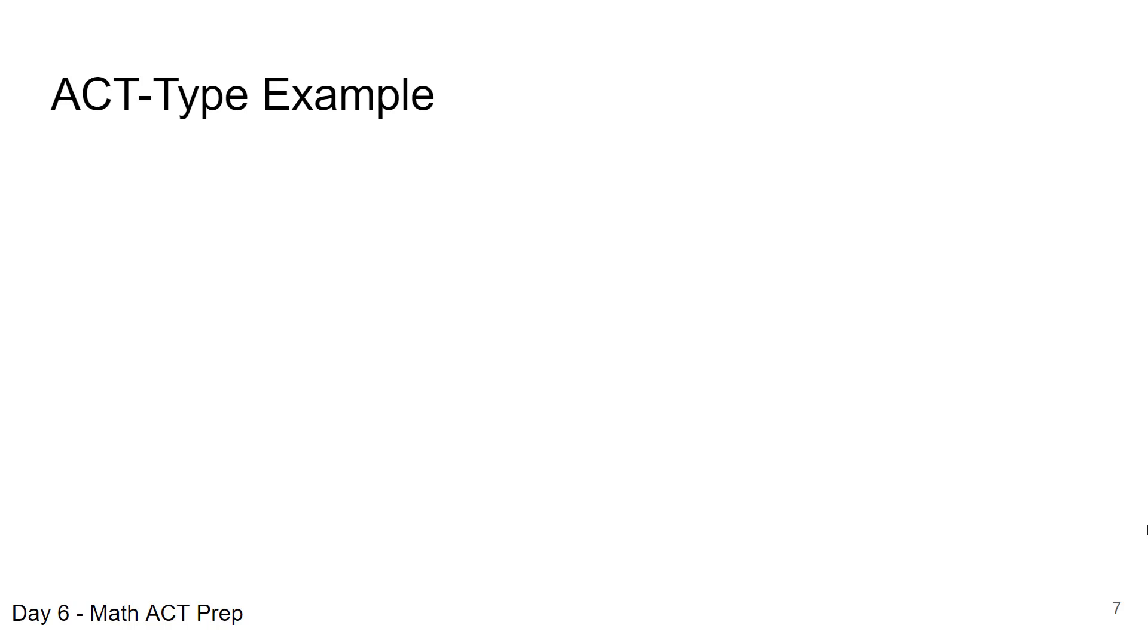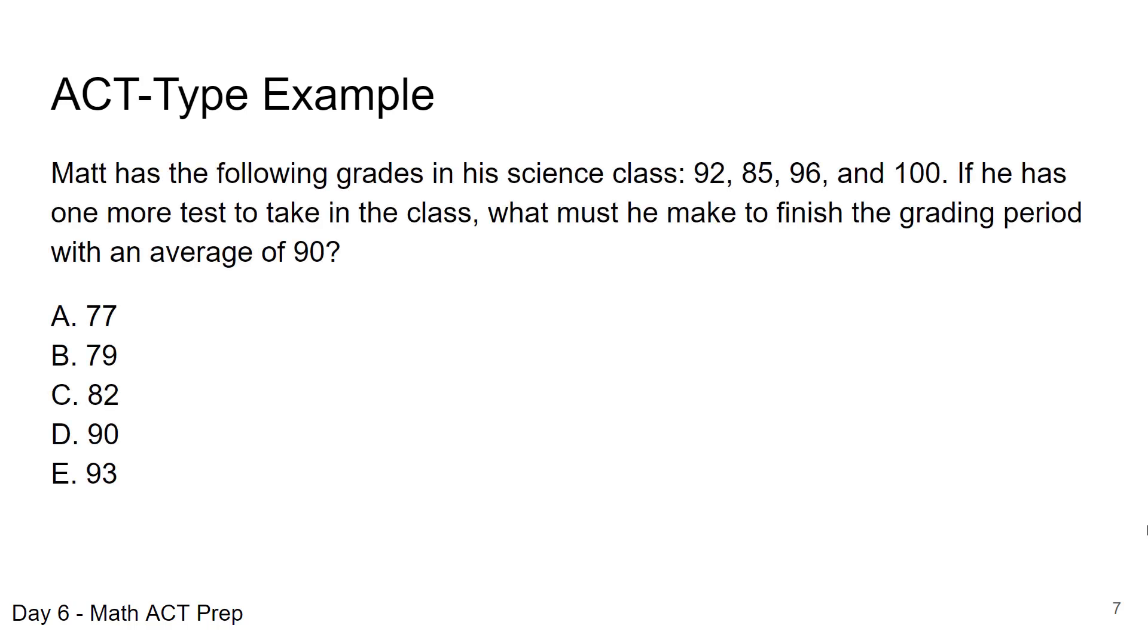Now let's take a look at an ACT-type example. Work this problem and then we'll come back and work it together. Matt has the following grades in his science class. We're given four grades. If he has one more test to take in the class, what must he make to finish the grading period with an average of 90?